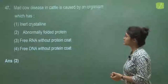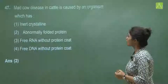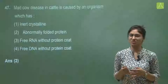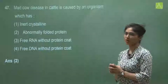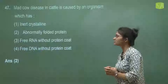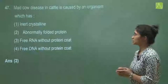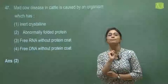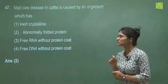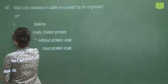Question 47 asks what mad cow disease in cattle is caused by. This is a basic question from NCERT biological classification. The first option is inert crystalline — this is wrong. The second option is abnormally folded proteins. This disease is caused by prions, which are abnormally folded proteins. So the correct answer is option two.